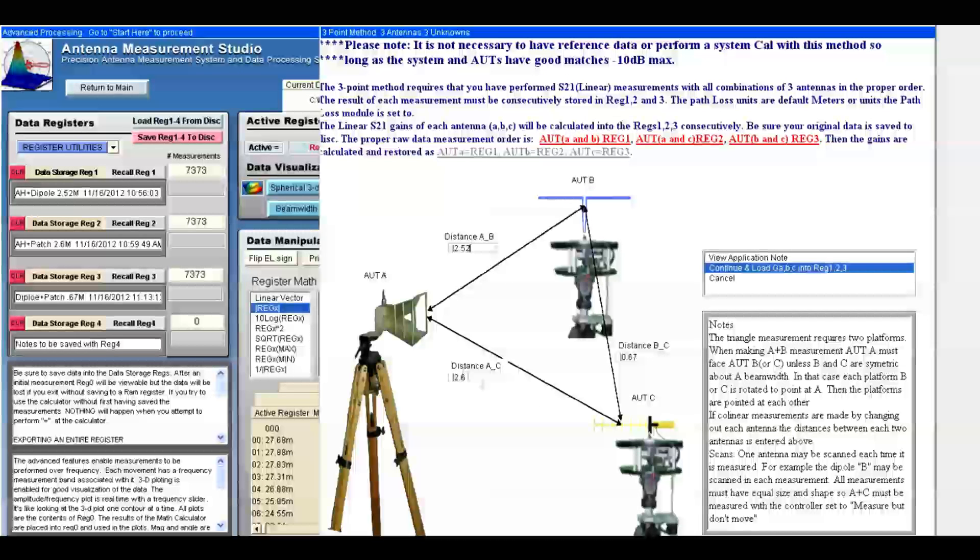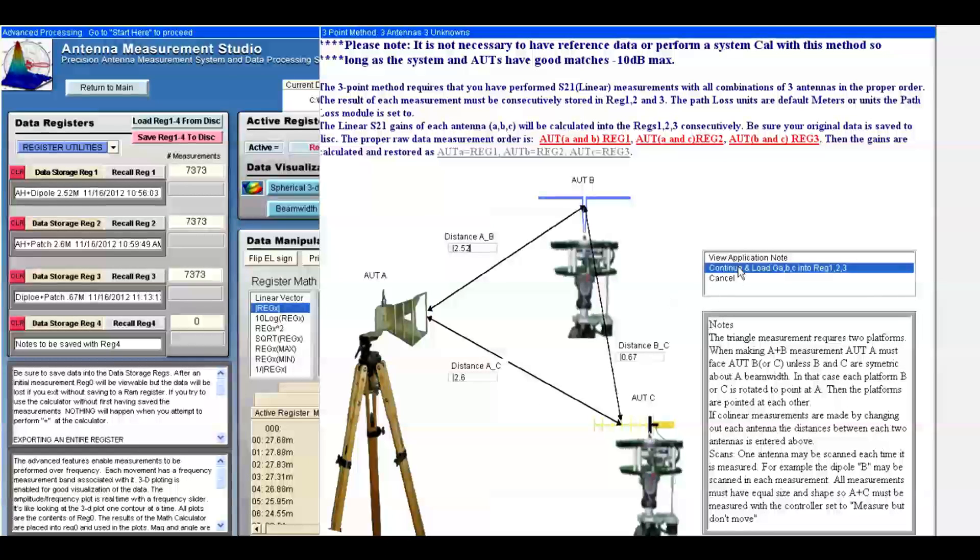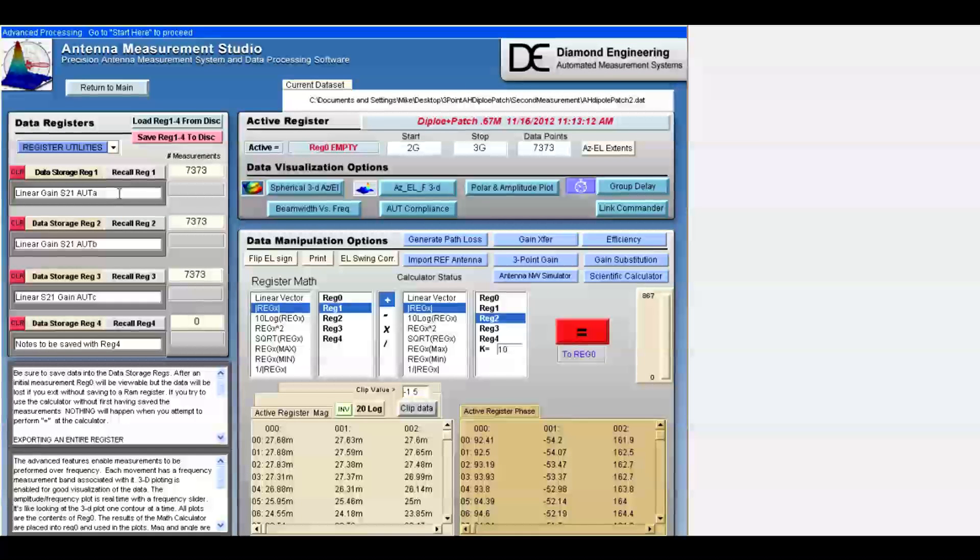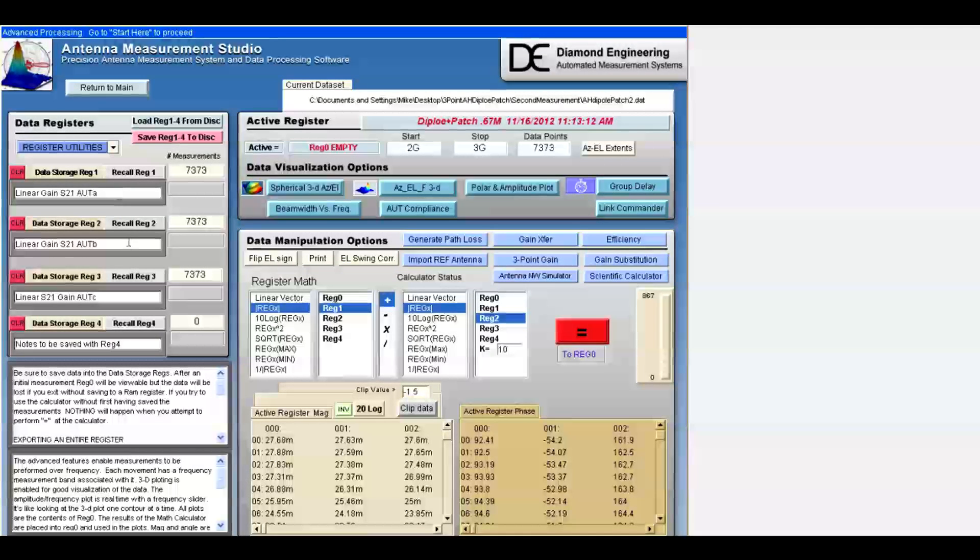Now, we'll load the calculated gains into the registers in place of the measurement data. When we do this, we can see that we have the various gains in the registers. AUT A is the reference horn, which is stored in register one. AUT B is the dipole, which is stored in register two, and AUT C is the patch, which is stored in register three.